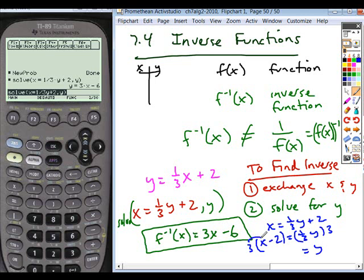So we isolate our y is equal to, distributing the 3, we get 3x minus 6. And that would be our inverse function.